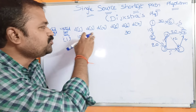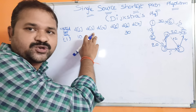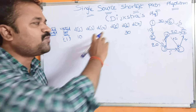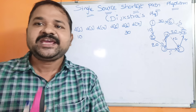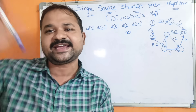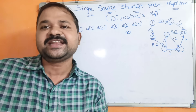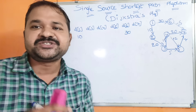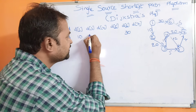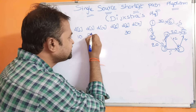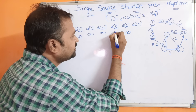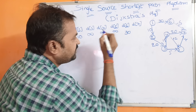From 1 to 3, there is no edge. From 1 to 4, no edge. From 1 to 5, there is no edge. If there is no edge from source vertex to that destination vertex, then we assume the cost as infinity. So the distance of 3 is infinity, cost of 4 is infinity, cost of 5 is infinity, and cost of 7 is infinity.